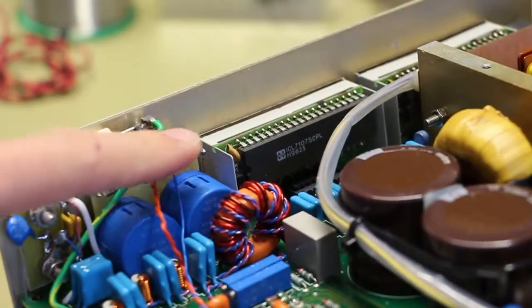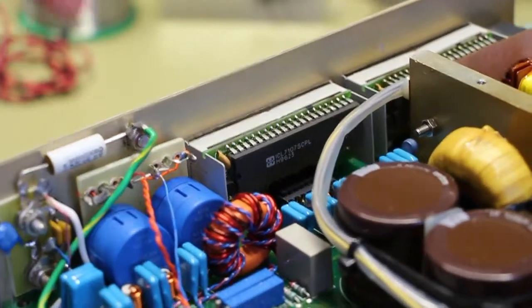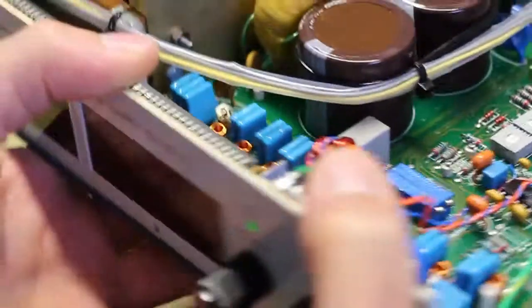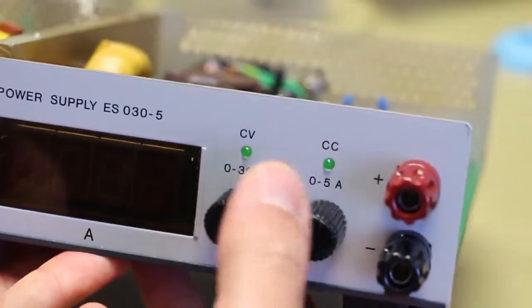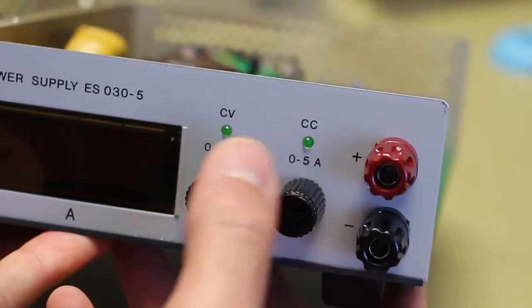The pins that we're looking at over here belong to the front panel indicator LEDs. They'll display if the power supply is in either constant voltage or constant current mode.